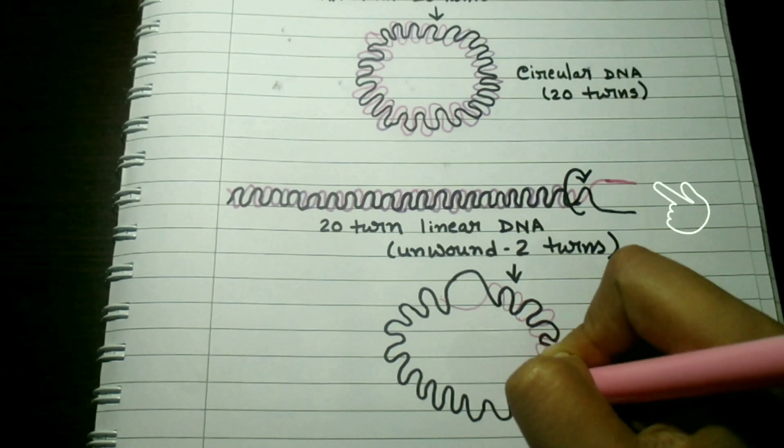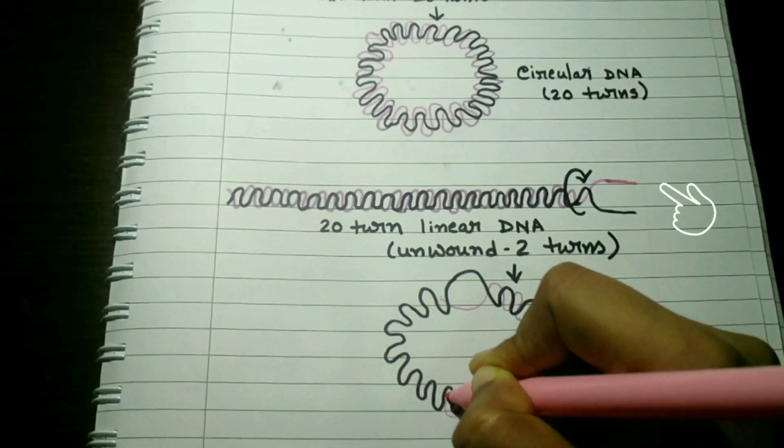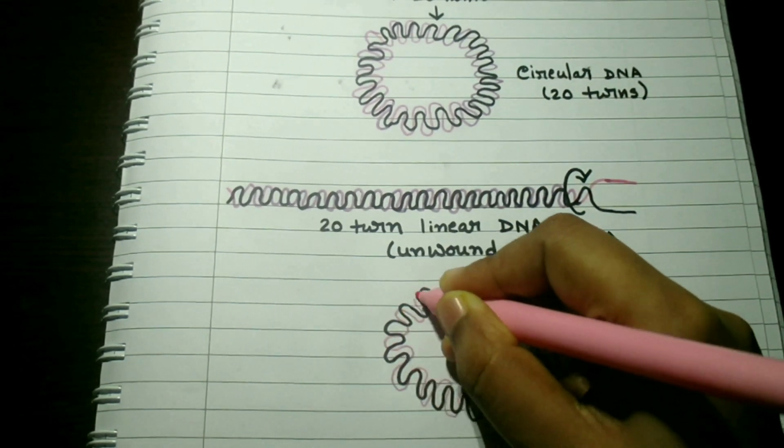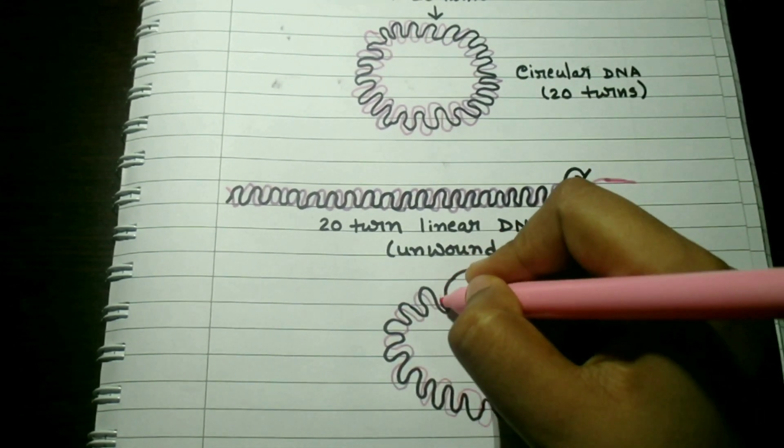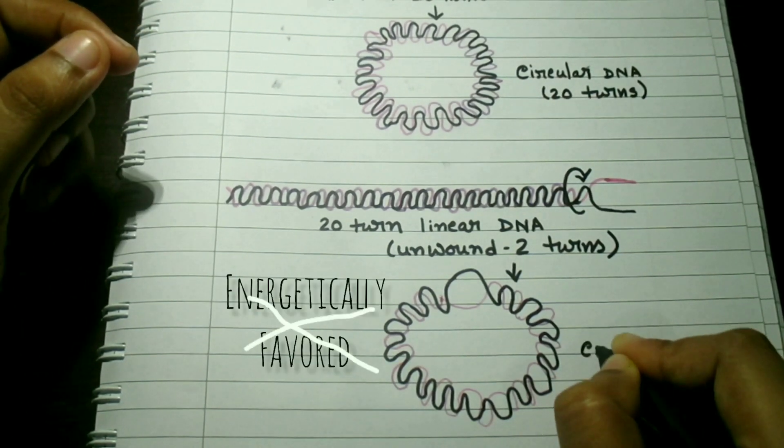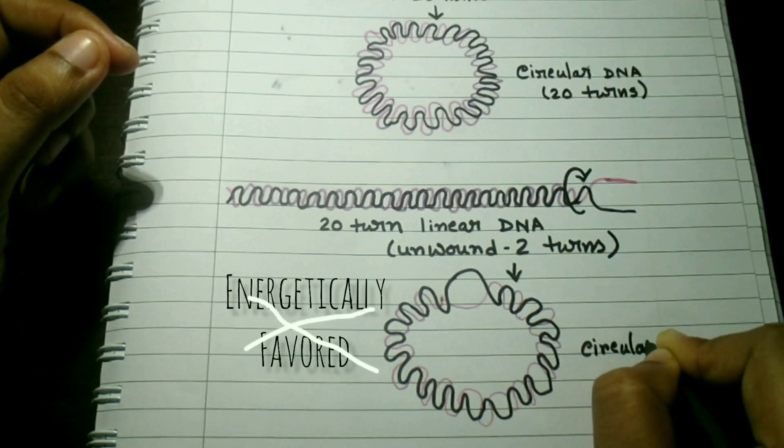If we simply join the two ends, we have produced a circular DNA molecule that is relaxed. If instead we first untwist one end of the linear DNA molecule by two turns and then join the two ends, the circular DNA molecule produced will have 18 helical turns.